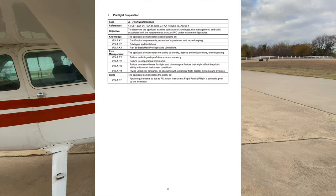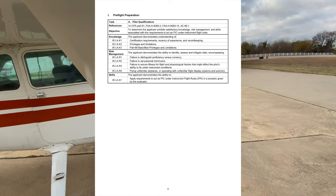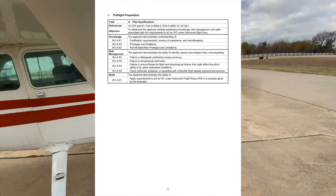We're going to start off with pilot qualifications, which is IR, IA, K1. We're just going to start off with K1 — you can follow along with your ACS. K1 covers qualifications, certification, and recency. What are the hour qualification requirements for an instrument pilot?